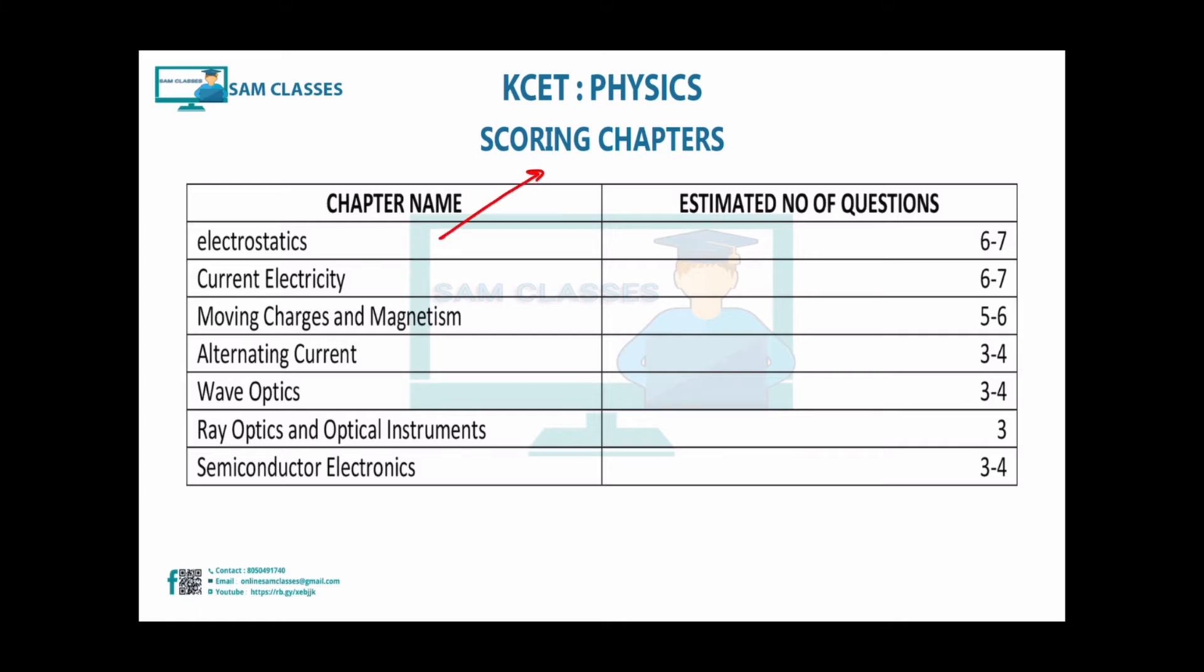Let's look at important chapters to focus on. First is Electrostatics - chapters 1 and 2, including electrostatic series and capacitance, with 6-7 questions based on analysis from 2014 to 2020. Current Electricity, again 6-7 questions. Moving Charges and Magnetism is also high scoring with 5-6 questions. Alternating Current has 3-4, Wave Optics 3-4, Ray Optics 3, and Semiconductors 3-4.